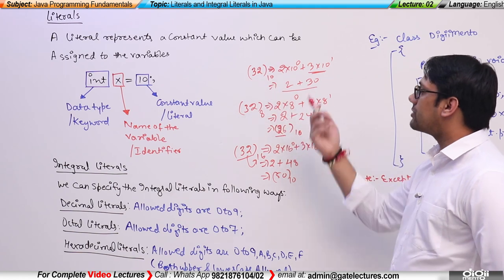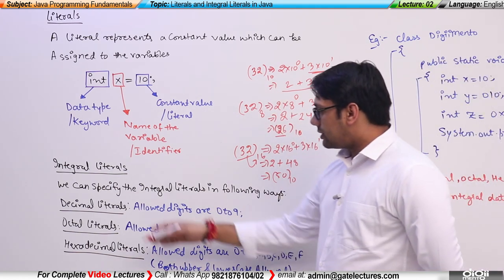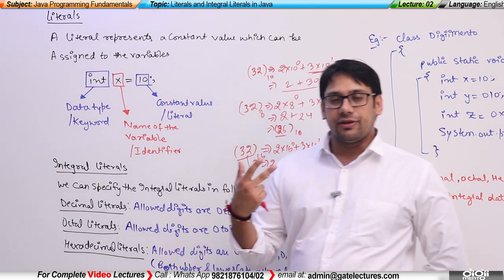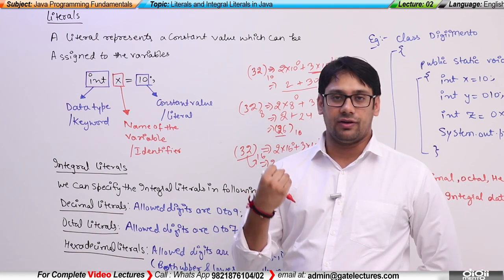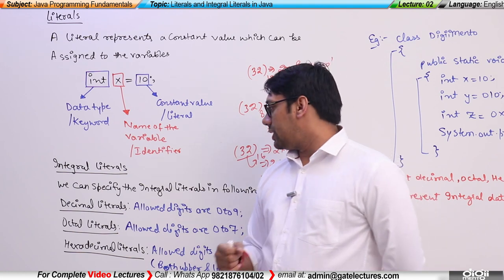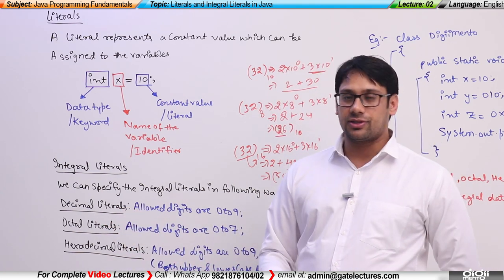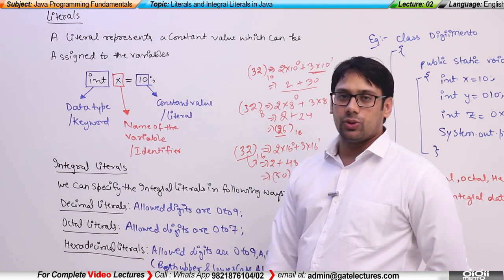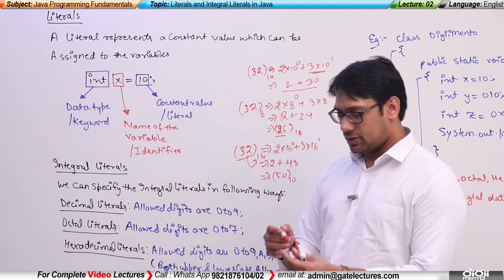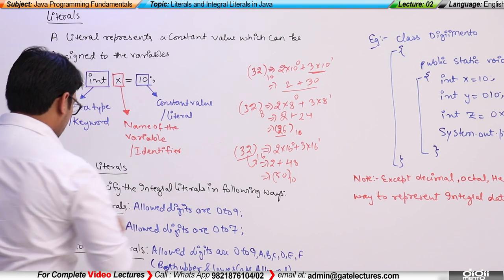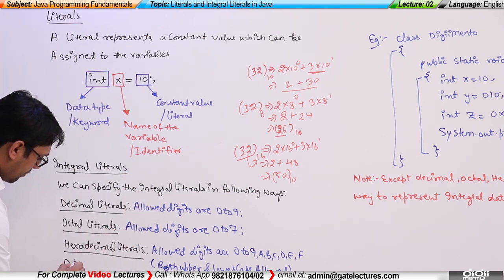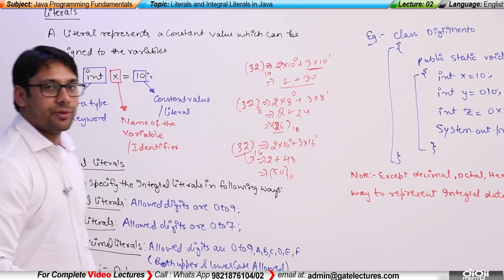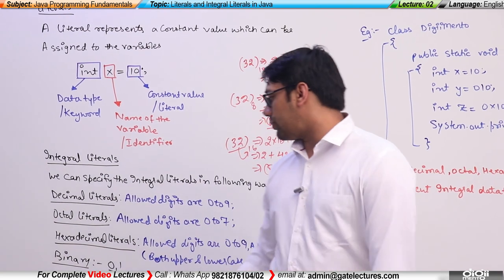So that is how you represent integer numbers in Java. Besides binary, ternary, and quinary number systems, Java also supports binary literals. In binary, only the digits 0 and 1 are allowed. So we should add binary as a fourth way to represent integral literals.